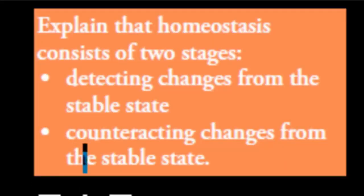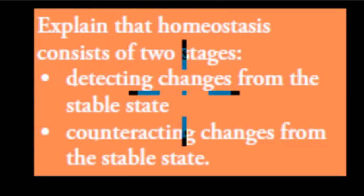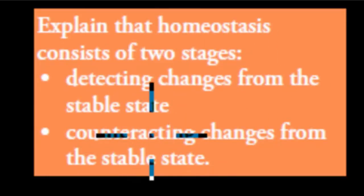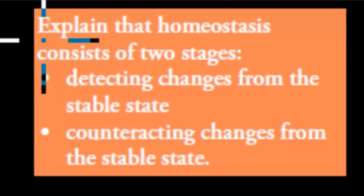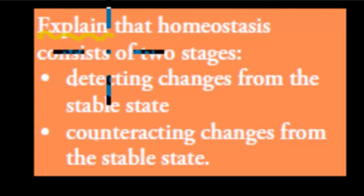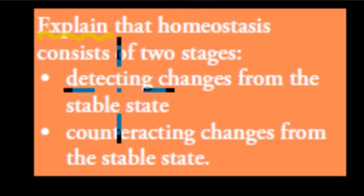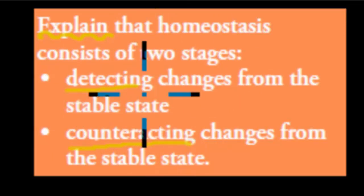Welcome back. In the last video we talked about homeostasis, what exactly homeostasis is. In this video we're going to cover something which really relates to the last dot point. The dot point itself says: explain that homeostasis consists of two stages — detecting changes from the stable state, and counteracting changes from the stable state. So for this dot point there's two parts we need to do.